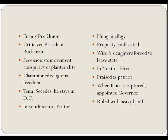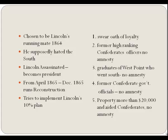In the South, Johnson was deemed a traitor. His properties were confiscated and his wife and daughters were essentially driven from the state. But in the North, Johnson's stand made him an overnight hero—praised as a true patriot who had risked his life and fortune to side with the Union. Following Union victories in Tennessee, President Lincoln appointed Johnson as military governor of the state with the rank of Brigadier General and the power to discharge all executive and judicial functions. He ruled with an extremely heavy hand.